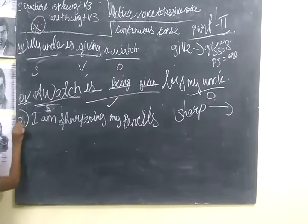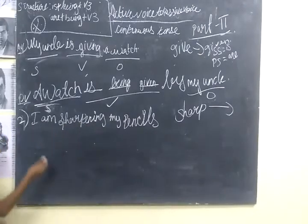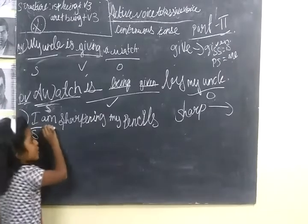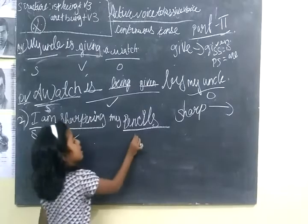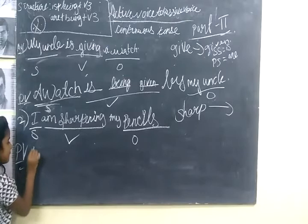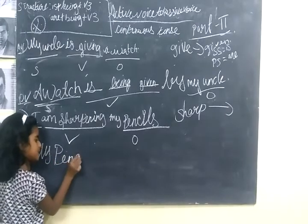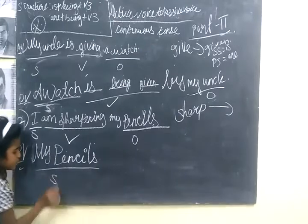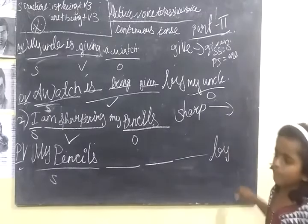The next one is number 2: 'I am sharpening my pencil.' In this, 'I' is the subject, 'sharpening' is the verb, and 'pencil' is the object. Now we see 'my pencils' — so this becomes the subject, and I am going to put three dashes and immediately put 'by me'.